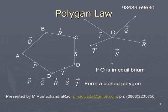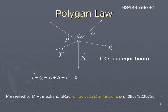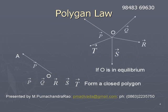Let us try to understand this using figures. Let us take the vectors P bar, Q bar, R bar, S bar, T bar acting at O, such that P bar + Q bar + R bar + S bar + T bar = 0. Let us represent P bar by OA — the vector OA represents P bar in magnitude and direction. The vector Q bar is represented in magnitude and direction by AB, so AB is parallel to Q bar and proportional in length to Q bar.